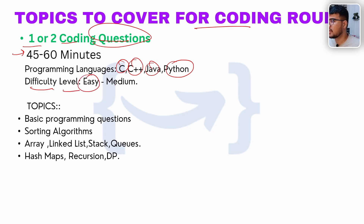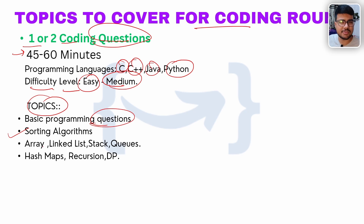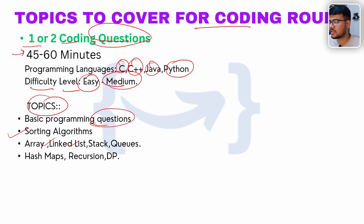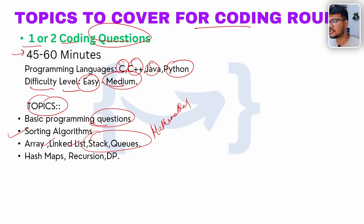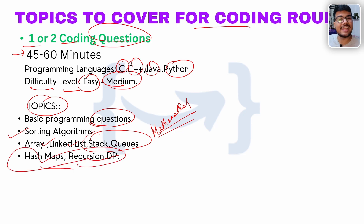The difficulty level is easy to medium. Topics include basic programming questions, sorting algorithms like bubble sort, selection sort, insertion sort, arrays, linked lists, basic-level questions like addition and subtraction, stack questions, and simple mathematical-based questions. Candidate feedback confirms that mathematical and logical-based questions were asked to be coded.